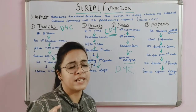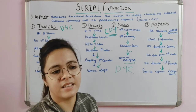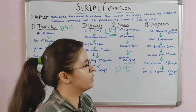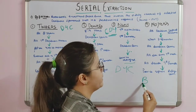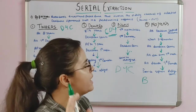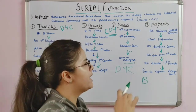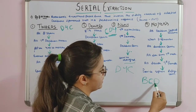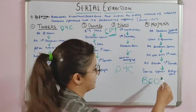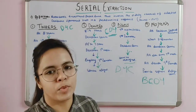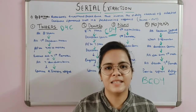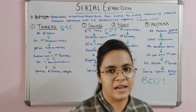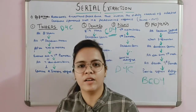Moyer's method is used when central incisors are poorly aligned and overlapping. All deciduous lateral incisors (B) are extracted first. After waiting seven to eight months, all deciduous canines are extracted, then all deciduous first molars, then all first premolars. This provides space for the permanent lateral incisors to erupt into a normal position after the canines are extracted.